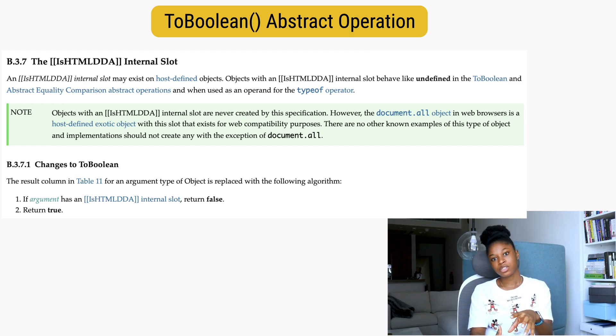We're not going to look at why the document.all object behaves like this, but if you want to find out why and know more about it, there's a great explanation in Kyle Simpson's book, the You Don't Know JS series titled Types and Grammar, and you can get it on Amazon.